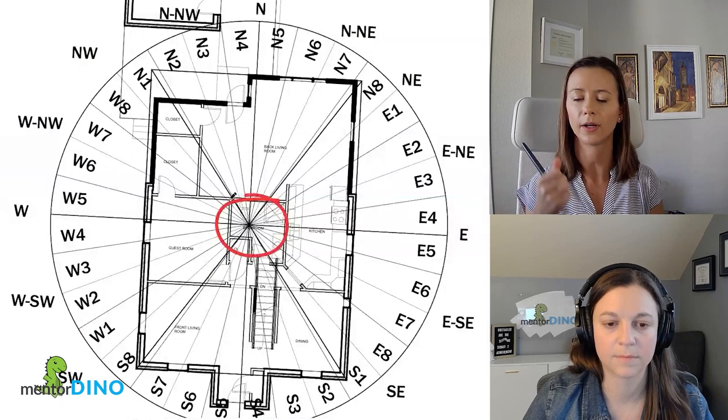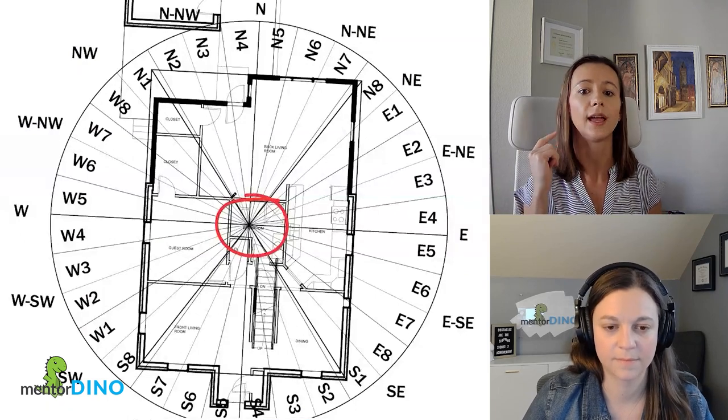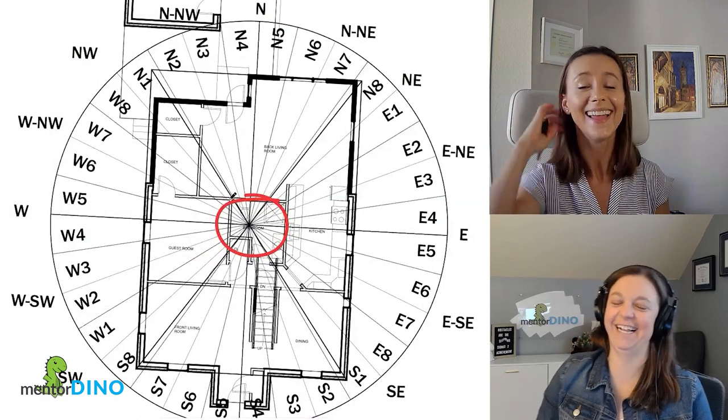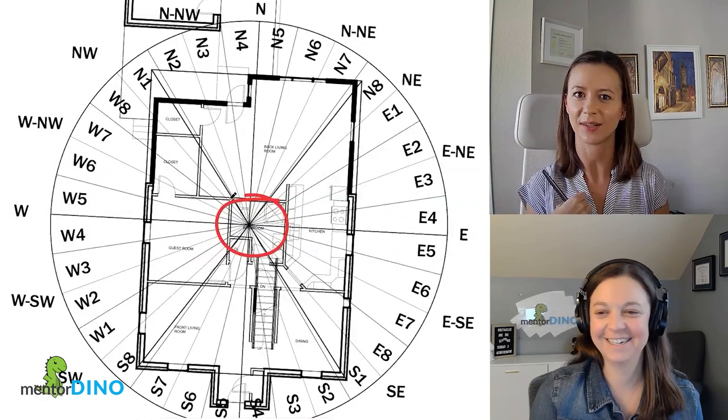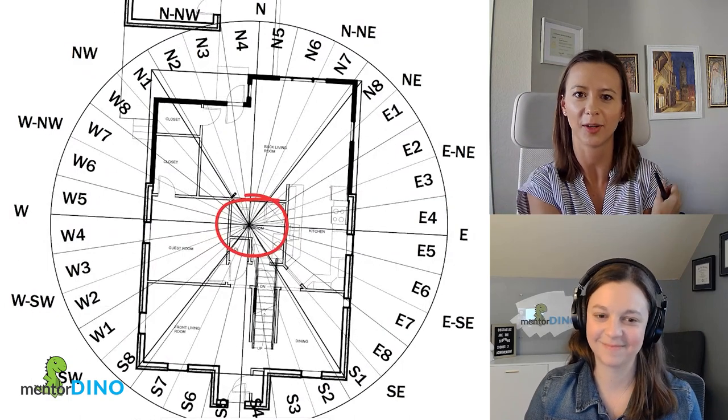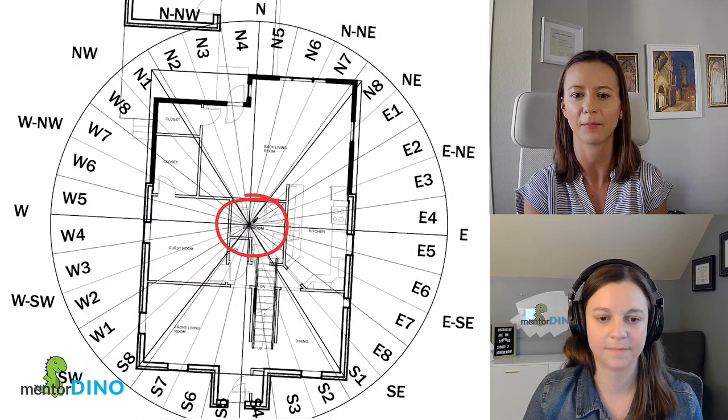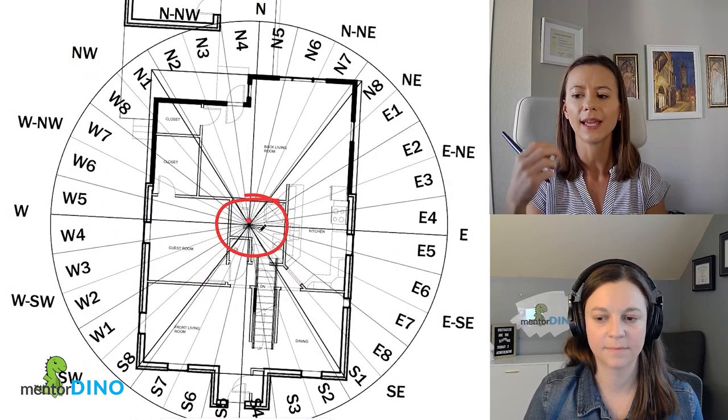So no load-bearing walls, no storage, and especially no toilet. And the center is pretty much right on the toilet. It is. And I have this condition in my home. We have a powder room on our lower level, and it's right in the center of the Bramhasthan.